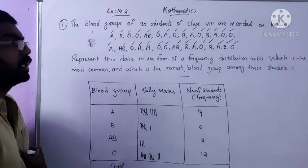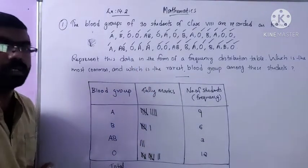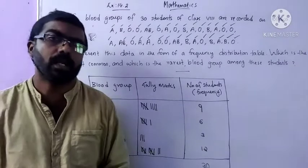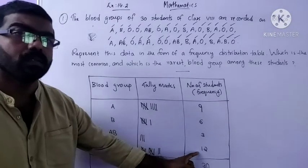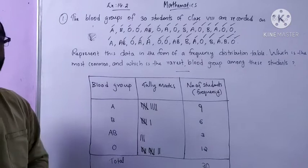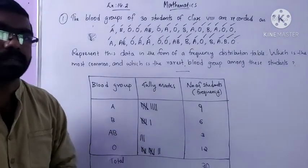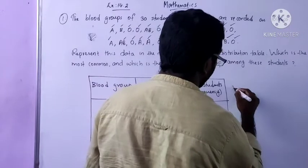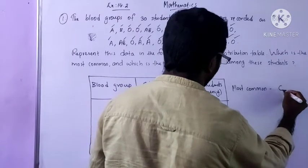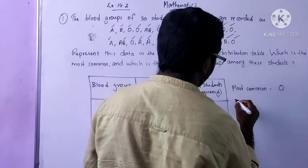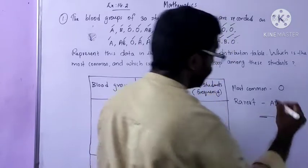Now we analyze this table to conclude which is the most common and which is the rarest blood group. From this table it is clear that O is the most common blood group because 12 students have blood group O. And the rarest one is AB — AB comes only 3 times. So, most common blood group is O and rarest is AB.